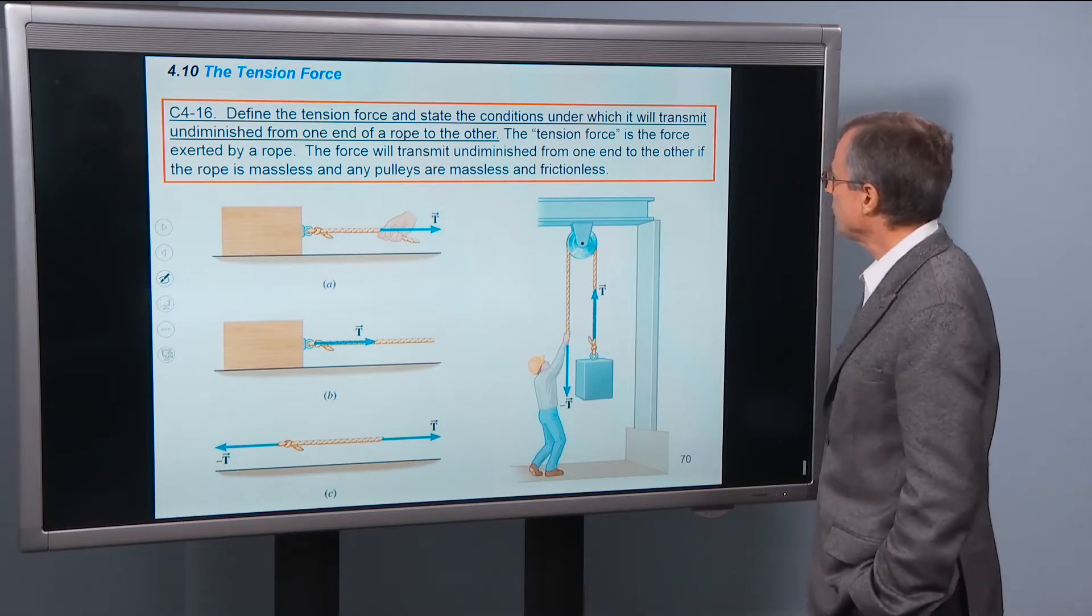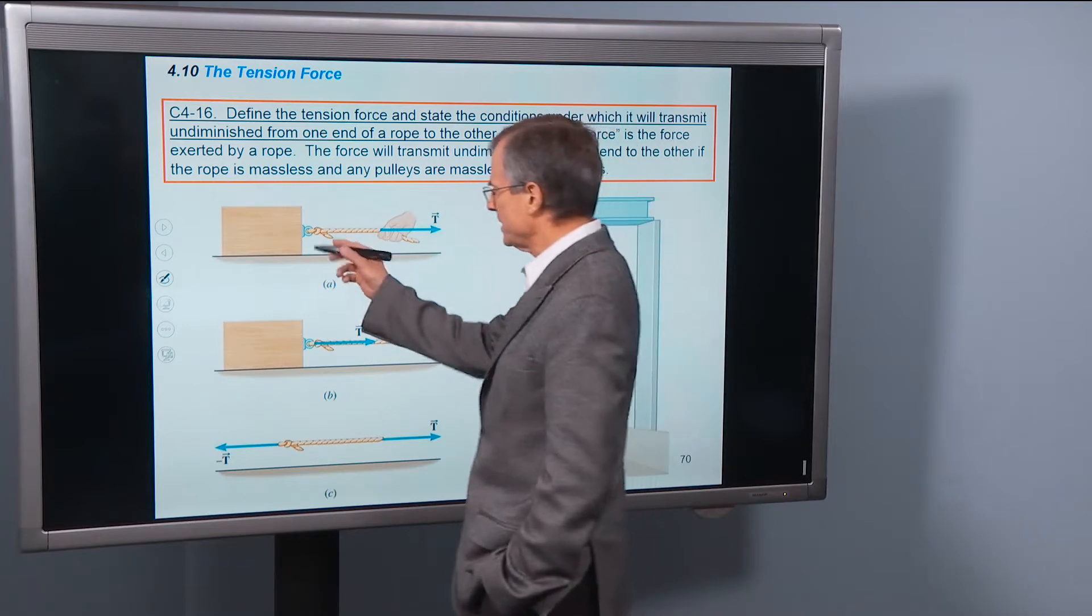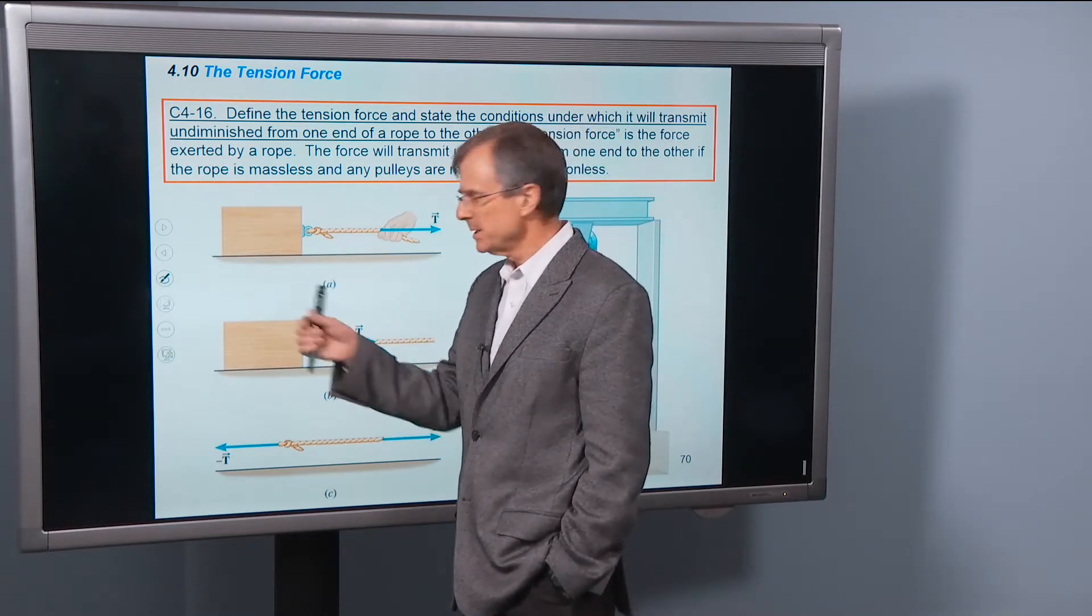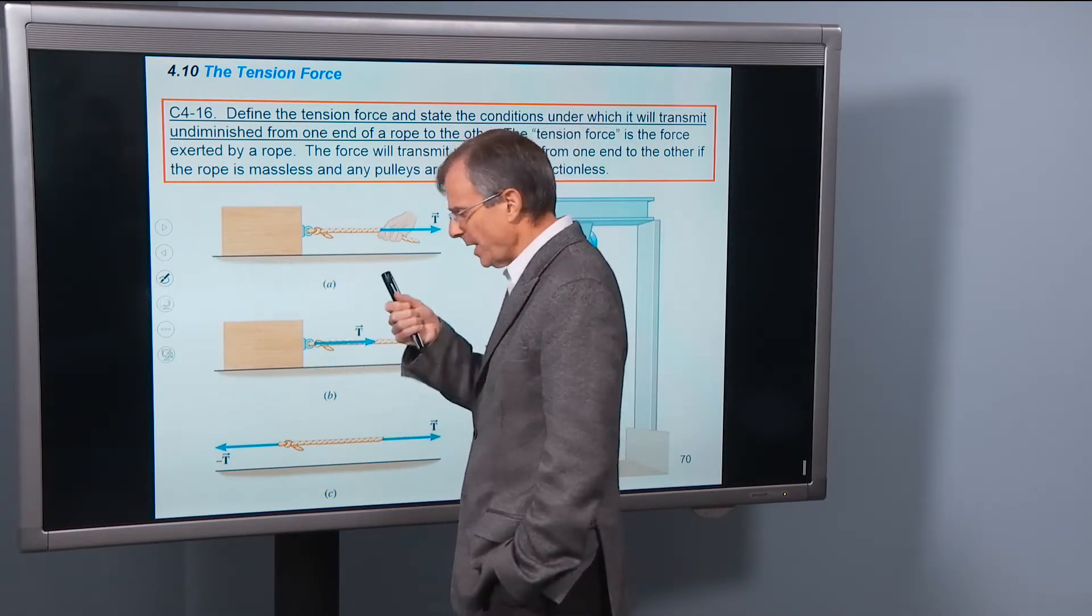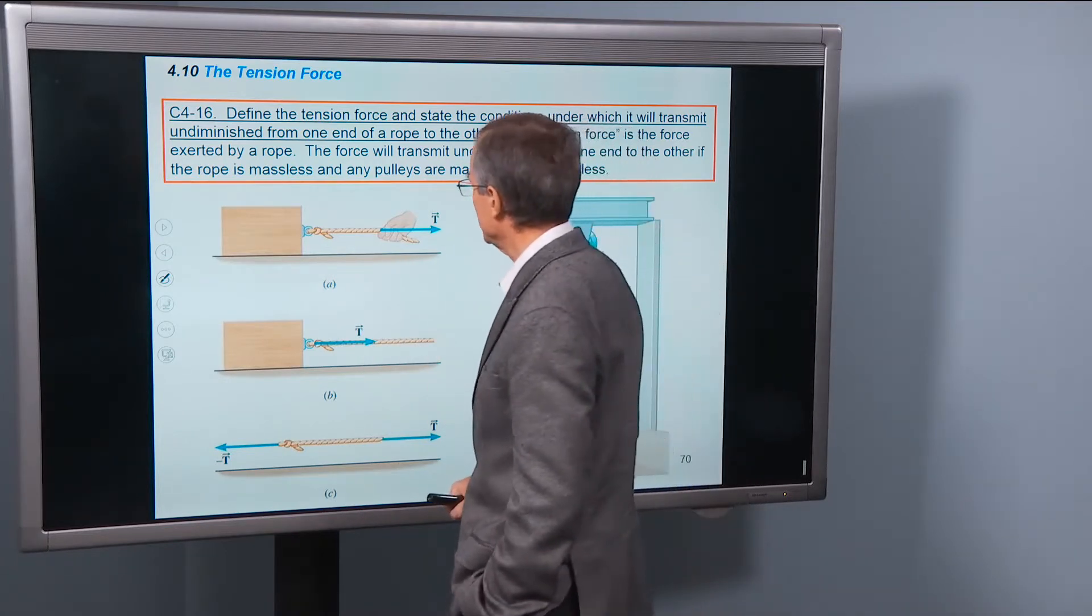The tension force is the force exerted by a rope. Generally, the rope is attached by some eyelet or other mechanism. You can tie it around a block. You're asking about how much force that rope is exerting on the block. That's called the tension.